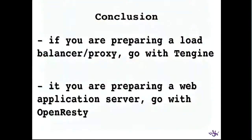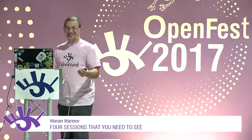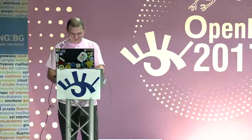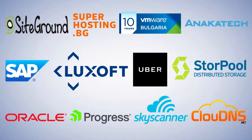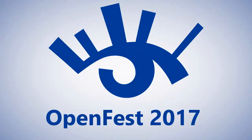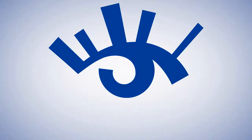They also have a statistics module and can do things based on user agent. If you're setting up a proxy, use Tengine instead of Nginx. If you're setting up an application server, use OpenResty instead of Nginx. Both have newer versions of the software than your distributions provide. Thank you very much.